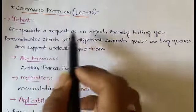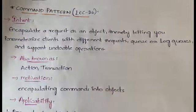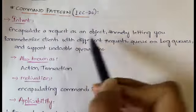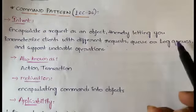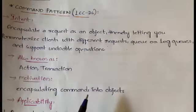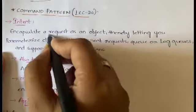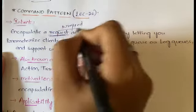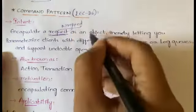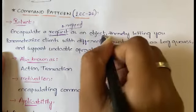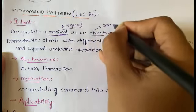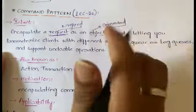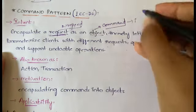The definition is a bit complicated but don't worry, I'll explain. The intent is to encapsulate a request as an object, thereby letting you parameterize clients with different requests, queue or log processes, and support undoable operations. So when you have a request, it will be wrapped under an object in the form of a command.